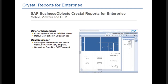Now we're talking about Crystal Reports for Enterprise, and there have been other enhancements inside this as well. Crystal Reports can now be seen more easily through mobile devices as well as certain OEM licensing agreements. You can also use the OpenDoc API post support with a very long URL. Support for right-to-left languages is now further integrated into Crystal Reports.